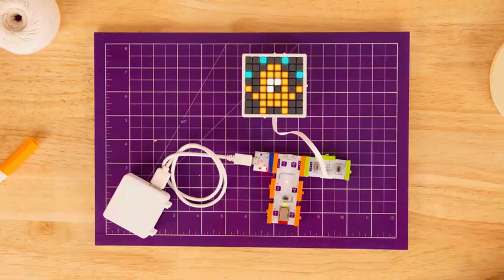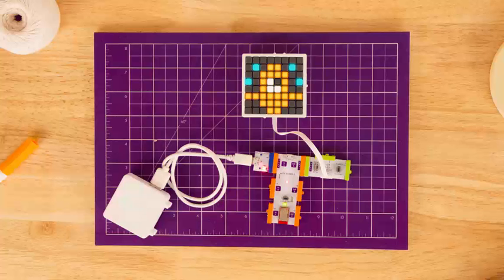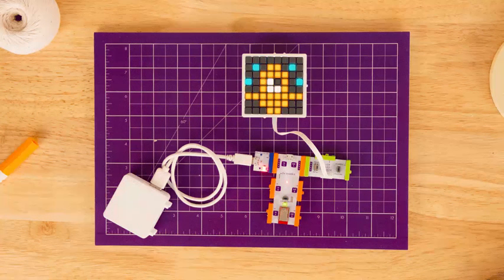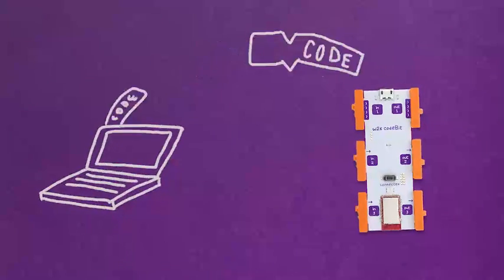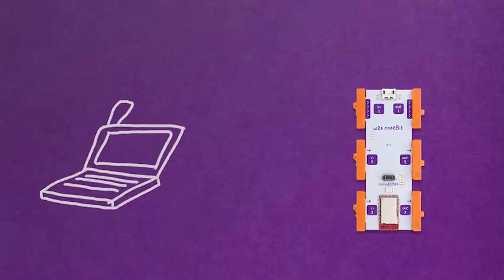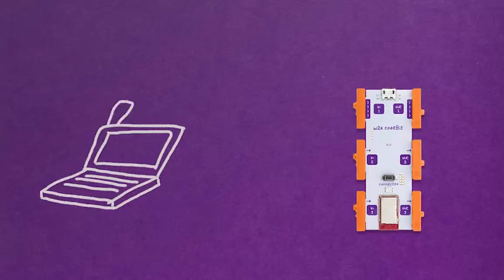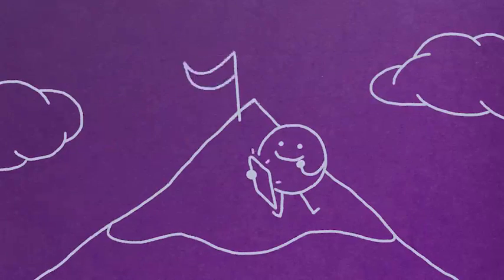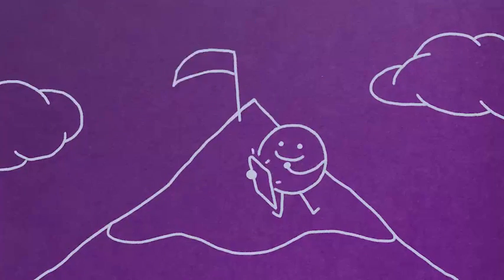Side note, if someone using this code bit before you has already loaded code onto the code bit, you might see stuff displayed on your matrix. Once you put code onto the code bit, it stays there until you upload something new to it, even if you disconnect the power or walk away from your computer. This means that you can create an invention and the code will go anywhere your circuit goes.